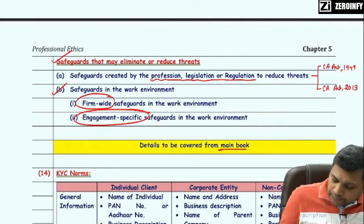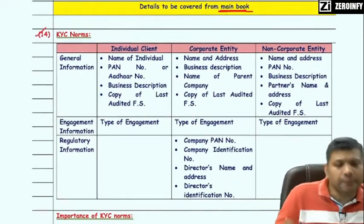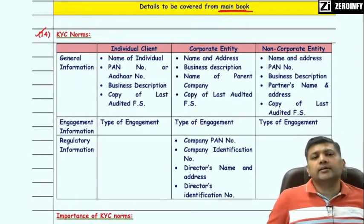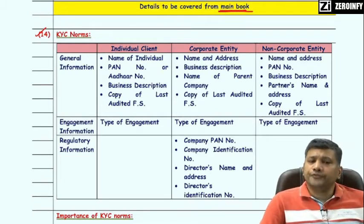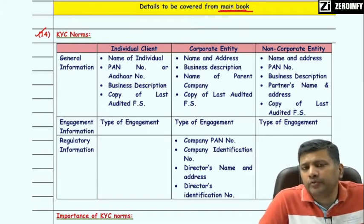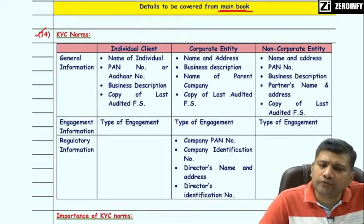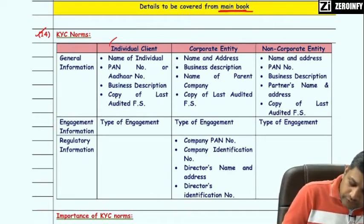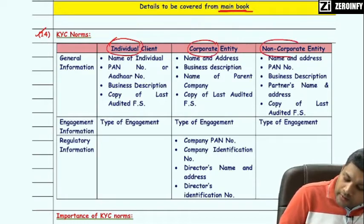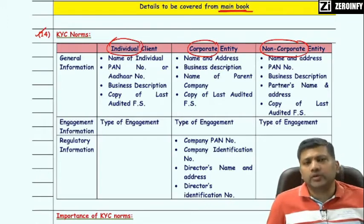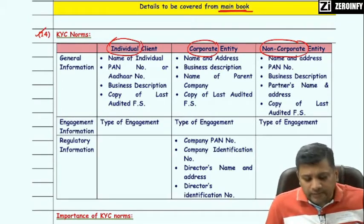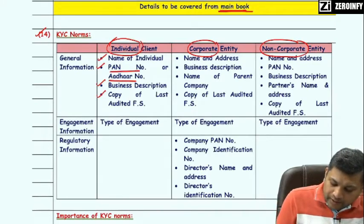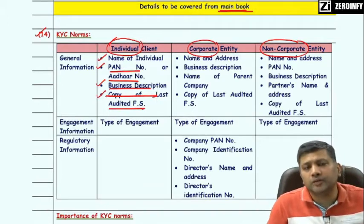Moving to the next topic: KYC norms. Just like the banking and finance sectors maintain KYC records of their customers, a practicing chartered accountant is also supposed to maintain KYC details of clients. A practicing firm should maintain details of individual clients including name, PAN number, Aadhaar number, business description, copy of latest audited financial statement, and type of engagement. For corporate entities like companies, KYC details include name and address, business description, name of parent company, copy of latest audited financial statement, types of engagement, company PAN number, company identification number, director name and address, and director's identification number.